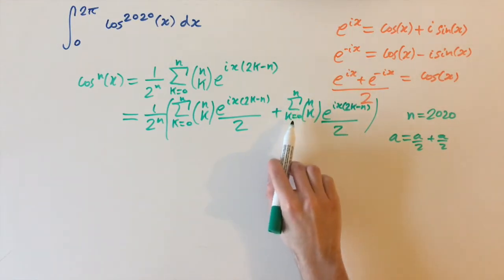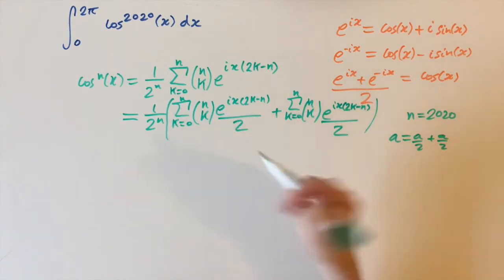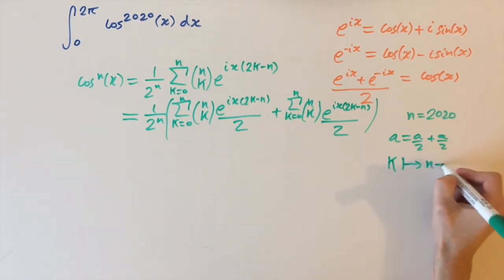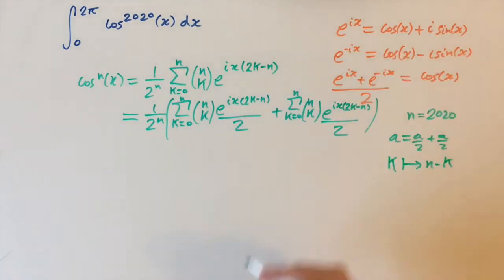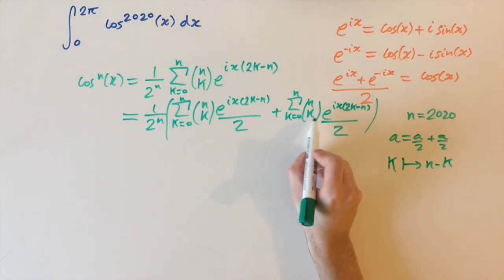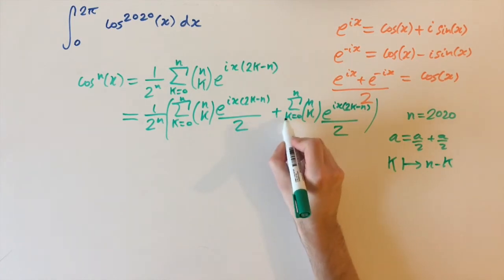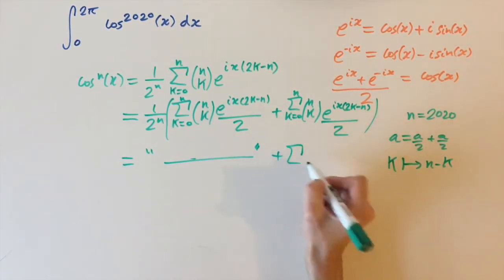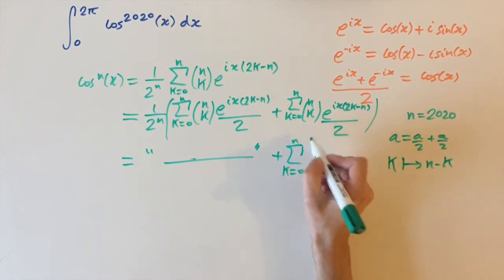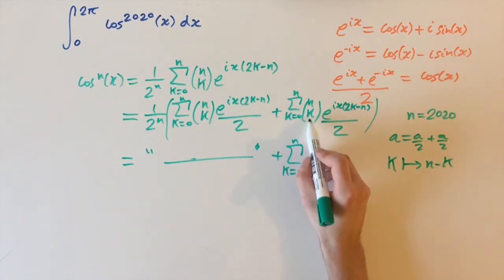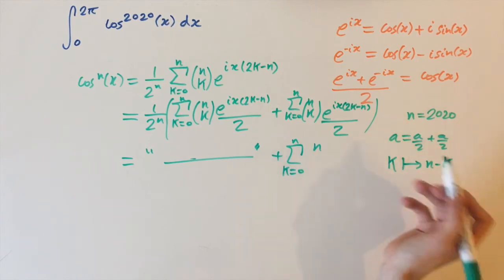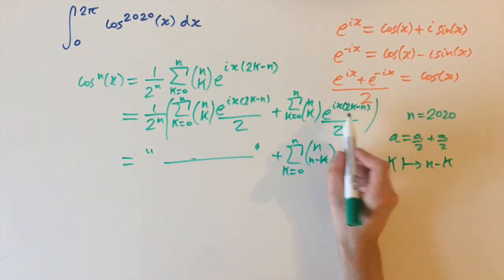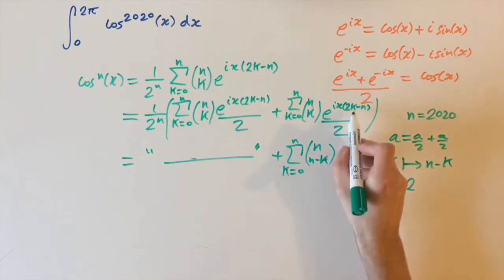For the second sum, instead of going from 0 up to n, we think of it going backwards by mapping the dummy variable from k to n minus k. So wherever we see k, we replace it by n minus k. The limits stay 0 to n since addition is commutative — the order doesn't matter as long as all terms are present.